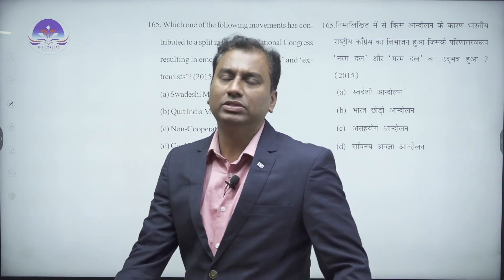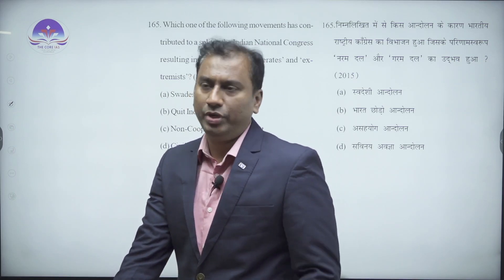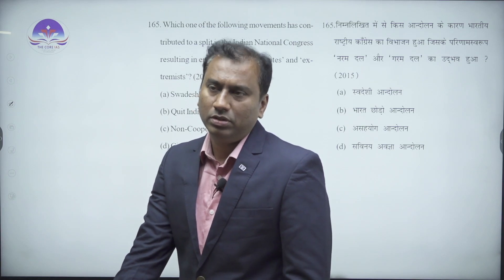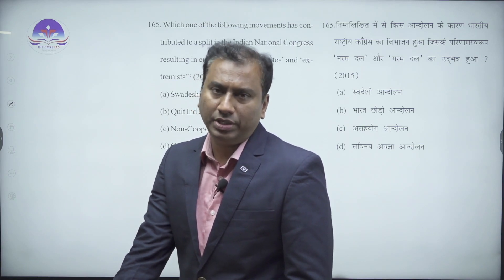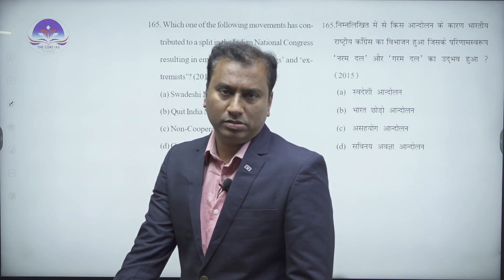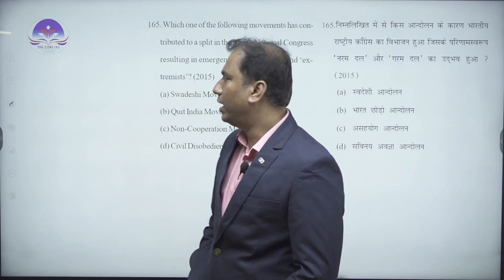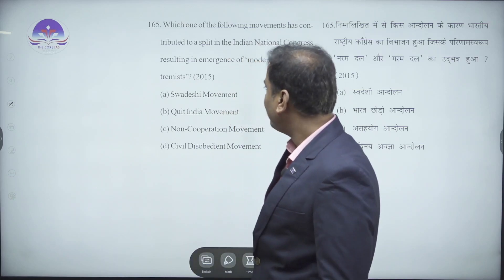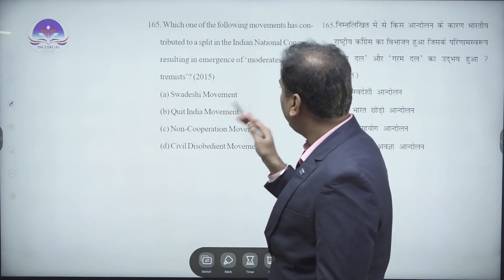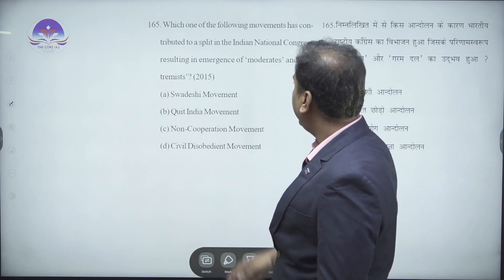Five major movements are seen after 1885: the Swadeshi Movement, Home Rule League, Non-Cooperation (Asahayog), Civil Disobedience (Savinay Avagya), and Quit India. So which of these led to the moderate and extremist split?